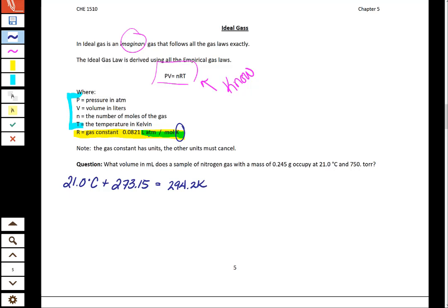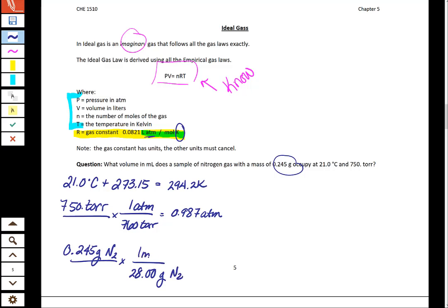In addition to that, our ideal gas law has units of atmospheres, and we were given this problem in torr. So we'll make sure to take a moment to convert from atmospheres to torr. And then finally, we are given our mass in grams, and we want moles. So we have to remember that nitrogen gas is one of our diatomic ones as we convert this. So we'll have 28 grams of nitrogen in one mole of nitrogen.